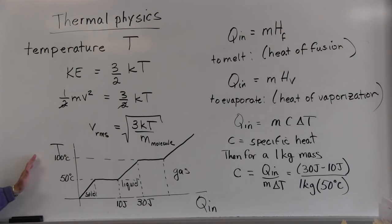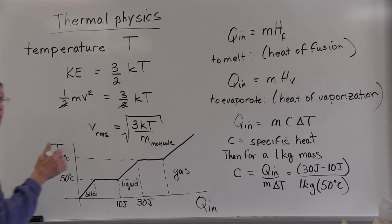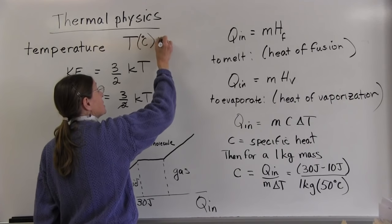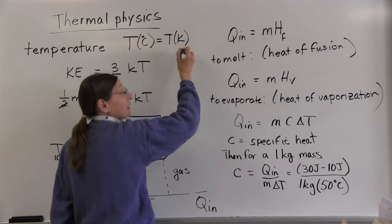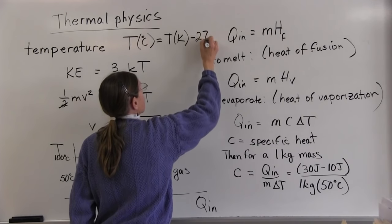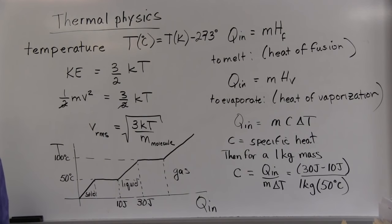I should have talked about temperature in different units. We've been using degrees Celsius. There's also degrees Kelvin — do you remember the conversion between Celsius and Kelvin? Degrees Celsius is the temperature in Kelvin minus 273. So 300 degrees Kelvin is approximately room temperature, or about 20 degrees Celsius.